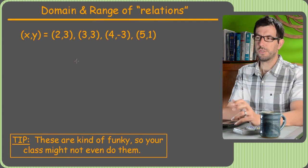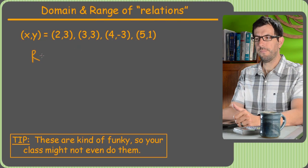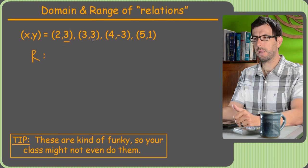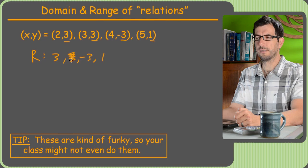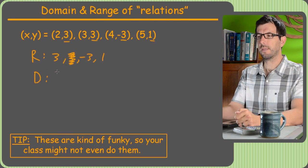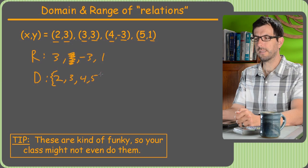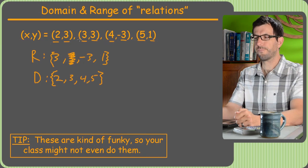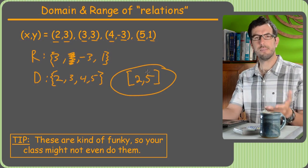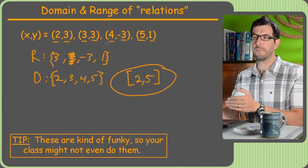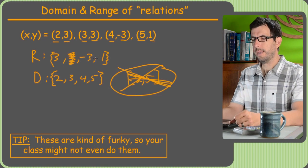Now for these weird problems called relations, where they just give you a series of points, some classes use these, some don't. The domain and range are just going to be the x and y values literally. So the range of this one is just going to be all the y values: 3, 3, negative 3, and 1. Usually teachers will let you not repeat stuff, so it would just be 3 used once. The domain is going to be the x values: 2, 3, 4, and 5. You might put these in squiggly brackets, like set notation. We're not doing interval notation like 2 to 5, because this would include every single point, fractions, decimals, everything between 2 and 5. But really this is just 4 discrete values of x. It only includes 2, 3, 4, and 5, not anything in between. Same thing for the range.